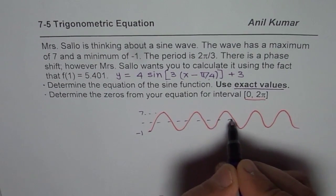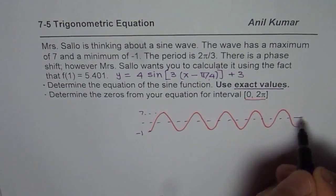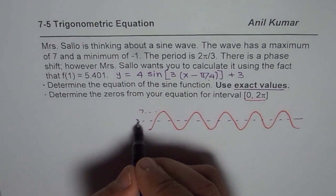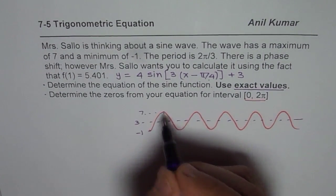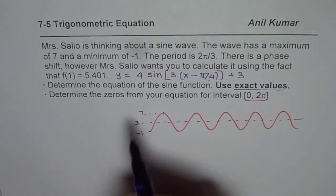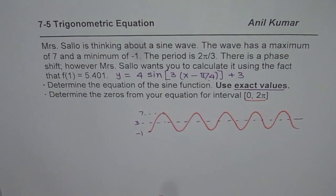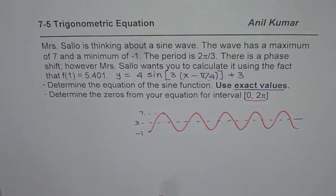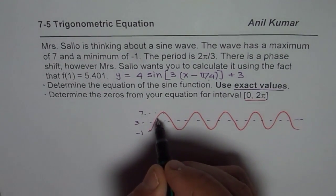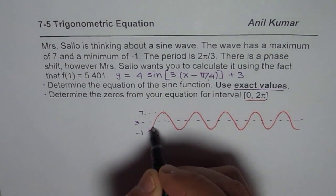What we were given is maximum of 7, minimum of minus 1, that gave us a mean value as we calculated in the equation, average of these 2 which was 3. The amplitude was 4, so 3 plus 4 is 7. And what we got is that the phase shift is minus π/4.